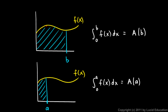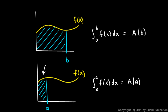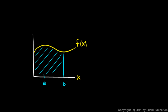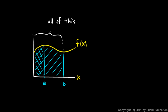Hopefully you can see on these pictures that if we're looking for the integral from a to b — this area in here — it would be all of this area minus that. If you don't see that, we can put them together on one graph: the integral from 0 to b is all of this, and the integral from 0 to a is all of that.